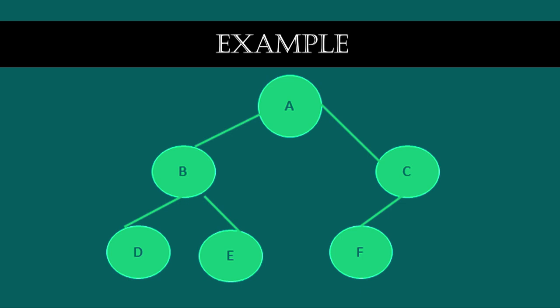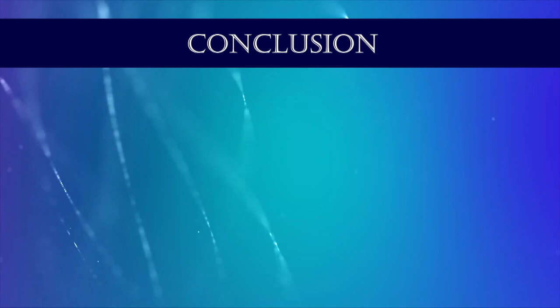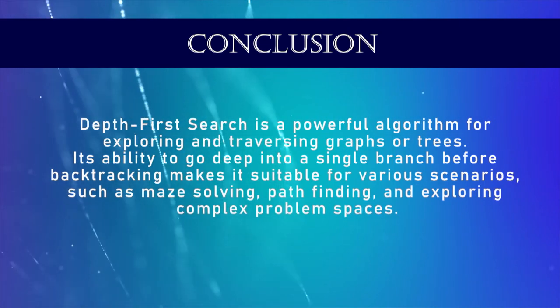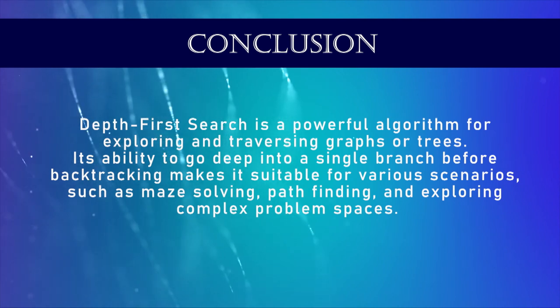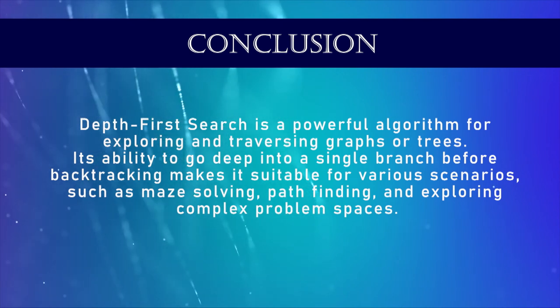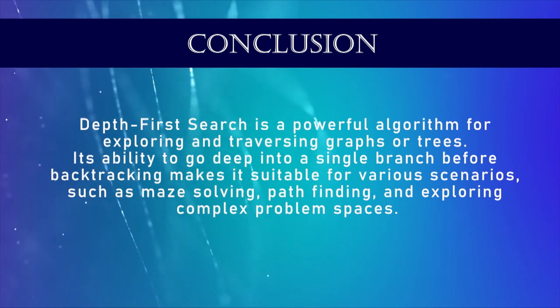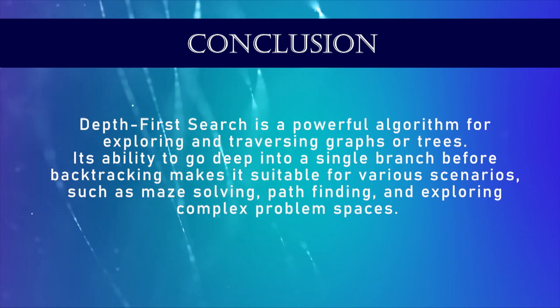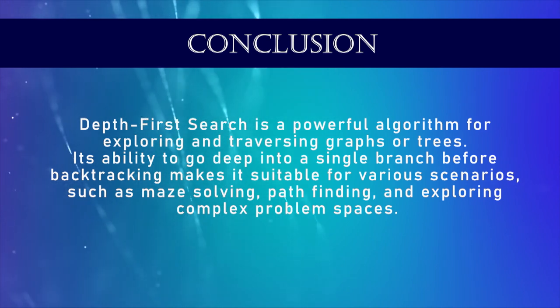One more example of DFS: consider the following graph with nodes A, B, C, D, E, F. Starting from node A, a DFS traversal would visit the nodes in the order: A, B, D, E, C, and F. Conclusion: depth first search is a powerful algorithm for exploring and traversing graphs or trees. Its ability to go deep into a single branch before backtracking makes it suitable for maze solving, path finding, and exploring complex problem spaces.